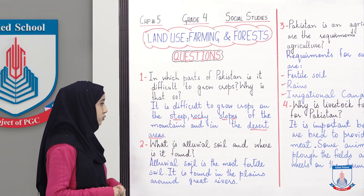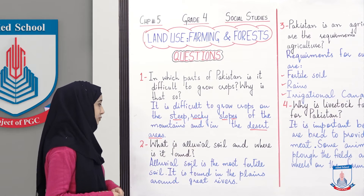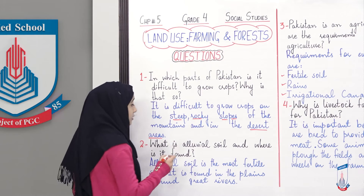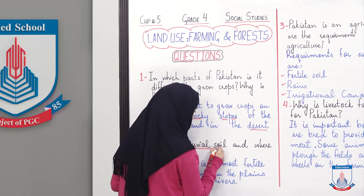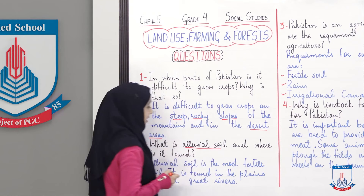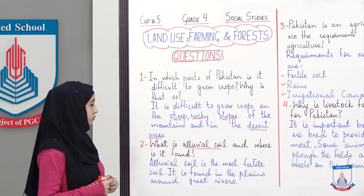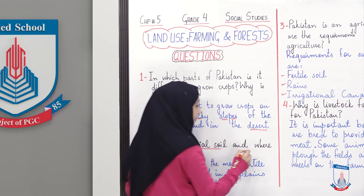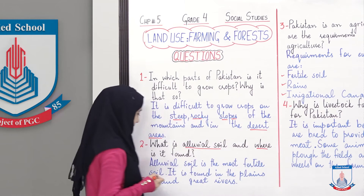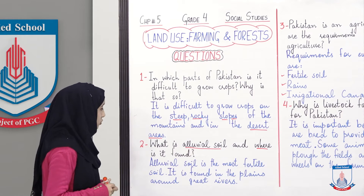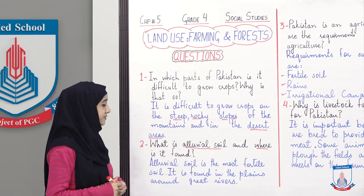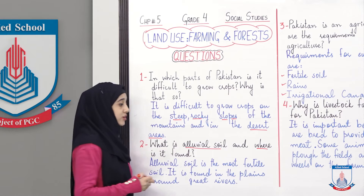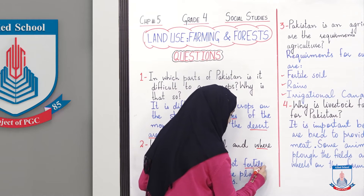Our next question is: what is alluvial soil and where is it found? وہ آپ سے پوچھا ہے کہ alluvial soil کون سی soil ہوتی ہے and where is it found — اور یہ ہمیں کہاں پہ ملتی ہے؟ So alluvial soil is the most fertile soil. fertile ہم کس کو کہتے ہیں — زرخیز کو.